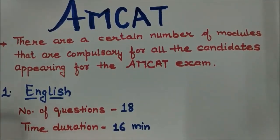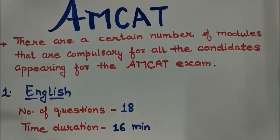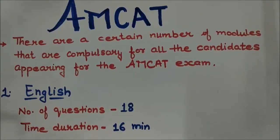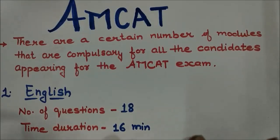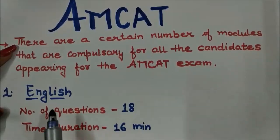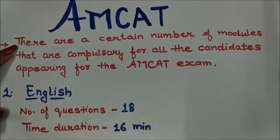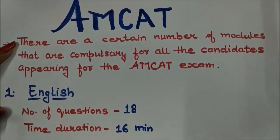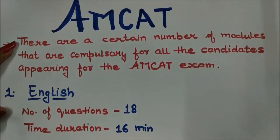In the MCAT exam there are a certain number of modules that are compulsory for all candidates. I have already discussed these modules in detail, but here I am telling you just about the module name, number of questions, and time duration. The first compulsory module is English, where you have to solve 18 questions in 16 minutes. Topics include antonyms, synonyms, error detection, and comprehension.